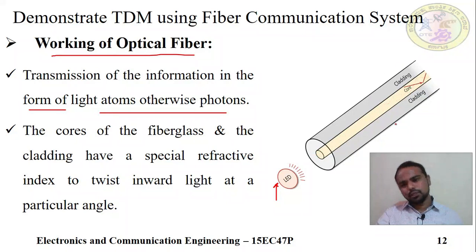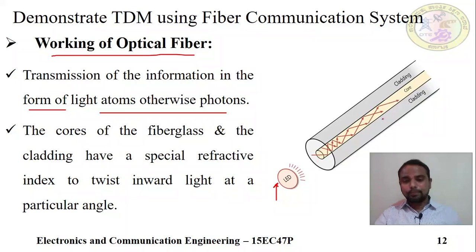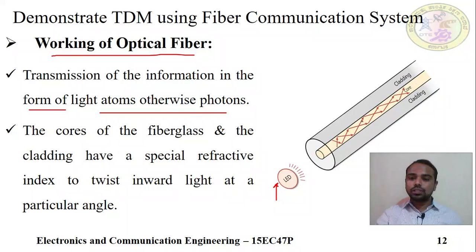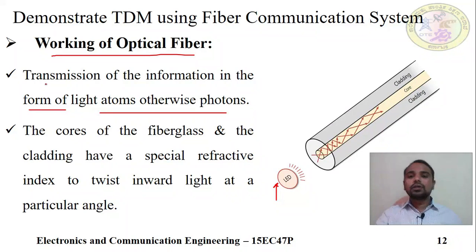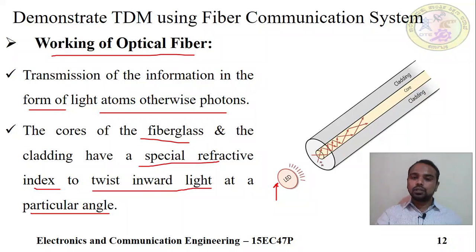Here we are sending information with the help of LED, and that information is transmitted through the core part. The transmission of information is in the form of light. The core of the fiber is glass, and the cladding has a different refractive index. The light is transmitted through the core and undergoes total internal reflection — it bounces in a zigzag pattern within the core due to the different refractive index between core and cladding.